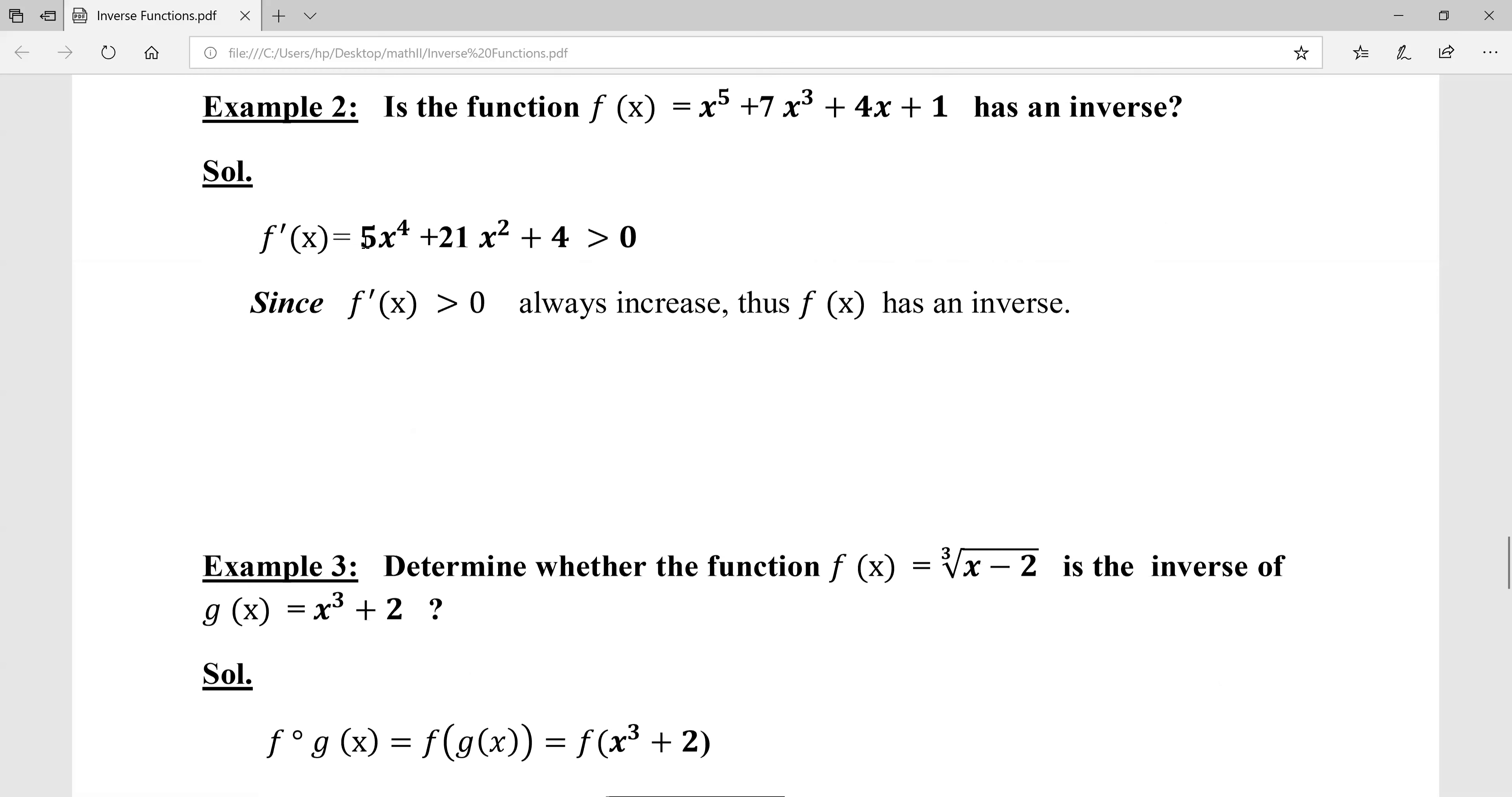Now apply the other condition. Take f'(x), the derivative: f'(x) = 5x⁴ + 21x² + 4. This first derivative is always positive. Why? First, all the mathematical operations are addition - plus, plus, plus. The exponents are even: we have power 4 here and power 2 here. Any value x takes, even negative values, will result in positive. So f'(x) > 0, and since f'(x) > 0, it's always increasing. Therefore, f(x) has an inverse.